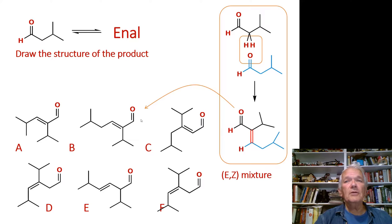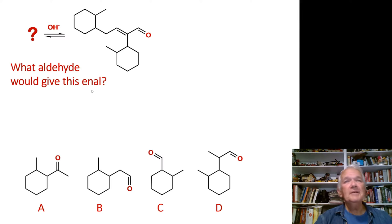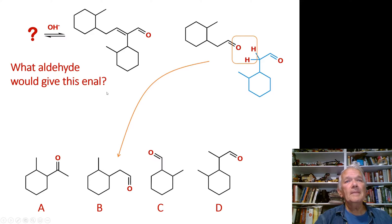Can you do this problem in reverse? Here I've taken some aldehyde, done the condensation, and here is the enal product. Can you figure out what the reactant was? Pause the video and try problem two. The answer: we take this double bond, split it apart, put an oxygen on one side and two hydrogens on the other — and that fragment is indeed molecule B. This is not hard to do. Going forward, you could still get E/Z isomers.